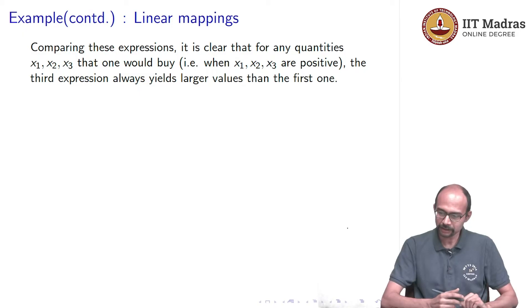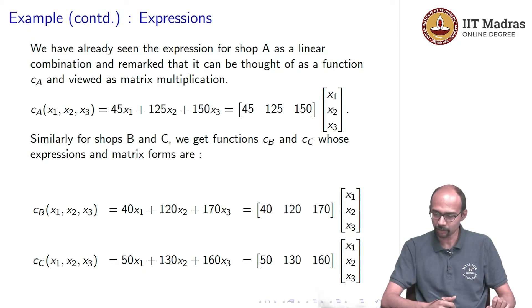To compare these expressions, let us go back for a second and check them out. We had 45x1 + 125x2 + 150x3, 40x1 + 120x2 + 170x3. So, rice and dal are cheaper in B than in A, but oil is more expensive. And then we have 50x1 + 130x2 + 160x3. So, rice and dal in C are more expensive than in shop B, but oil is less expensive.